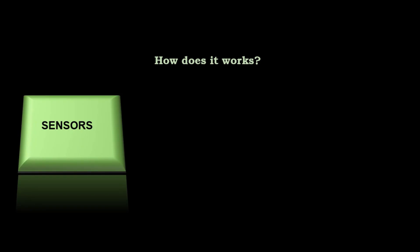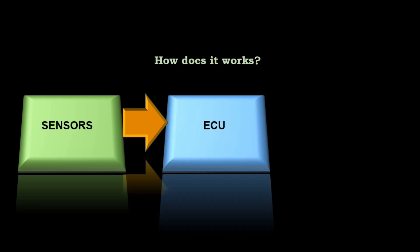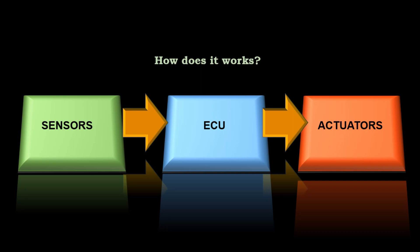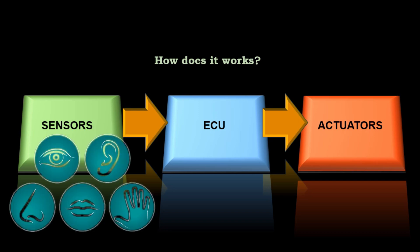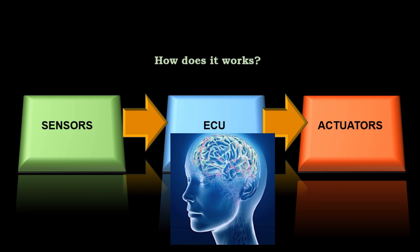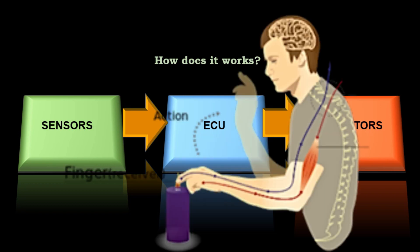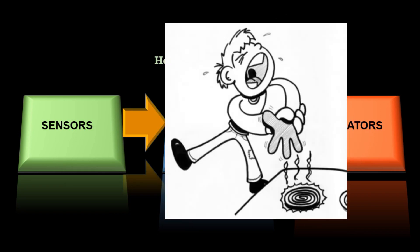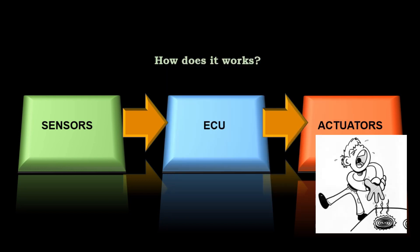So how does a computer-controlled system work? Sensors detect engine conditions and send that information to the ECM. The ECM then processes the information and gives signals to the actuators, which convert the electrical signal from the ECM into work. A computer-controlled system works just like your body — your senses of touch, smell, hearing, taste, and sight represent the sensors. When you touch a hot surface, your sense of touch tells your brain, which represents the ECM. Your brain commands your arm — representing the actuator — to act accordingly so as not to harm yourself.